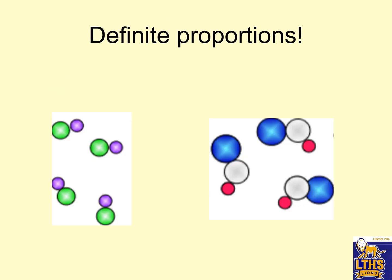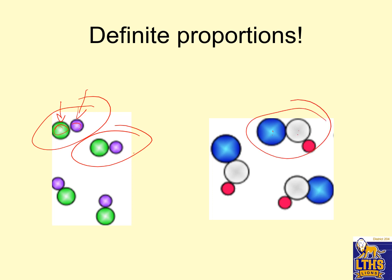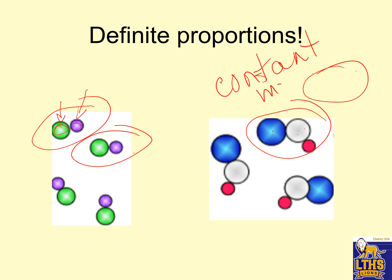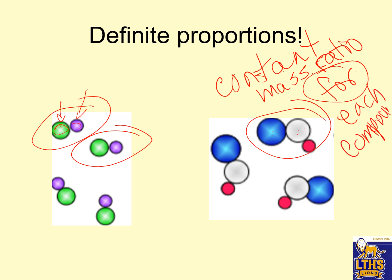Here's another example of what definite proportions means. Your compound weighs something, and in order for a sample to be that compound, it has to have the same mass ratio. Mass comes from particles, so there's one of these for every one of those — the mass ratio stays constant all the way through, giving a definite proportion. If it doesn't have a constant mass ratio, it's not a compound. Constant mass ratio for each compound — or else it's not a compound.